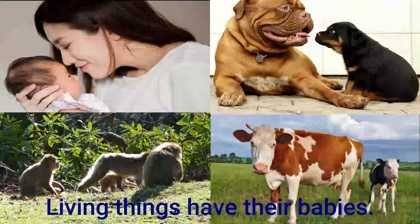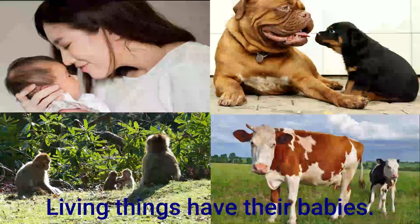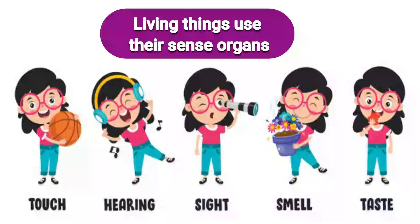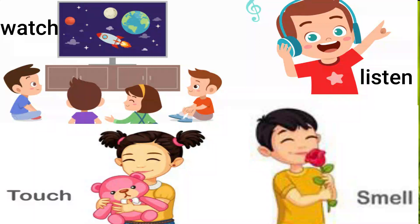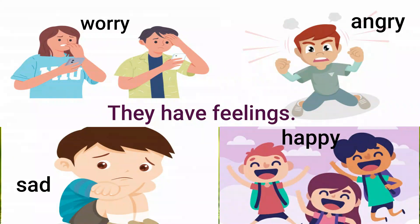Living things have their babies and they take care of their babies. Living things have sense organs and they use them. They use their eyes to watch, they can hear with the help of ears, they can touch with their skin, and they can smell with their nose. Living things also have feelings — they feel sad, happy, worried, and they show anger. So they have feelings.